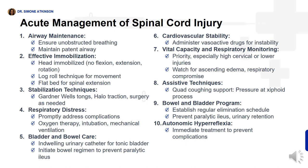A bowel and bladder program can be instituted to establish a regular schedule for bowel elimination, which will prevent paralytic ileus and urinary retention. Autonomic hyperreflexia must be treated immediately to prevent serious complications. In summary, acute management of spinal cord injury involves proper immobilization, airway maintenance, stabilization, close respiratory monitoring, and addressing potential complications with appropriate interventions.